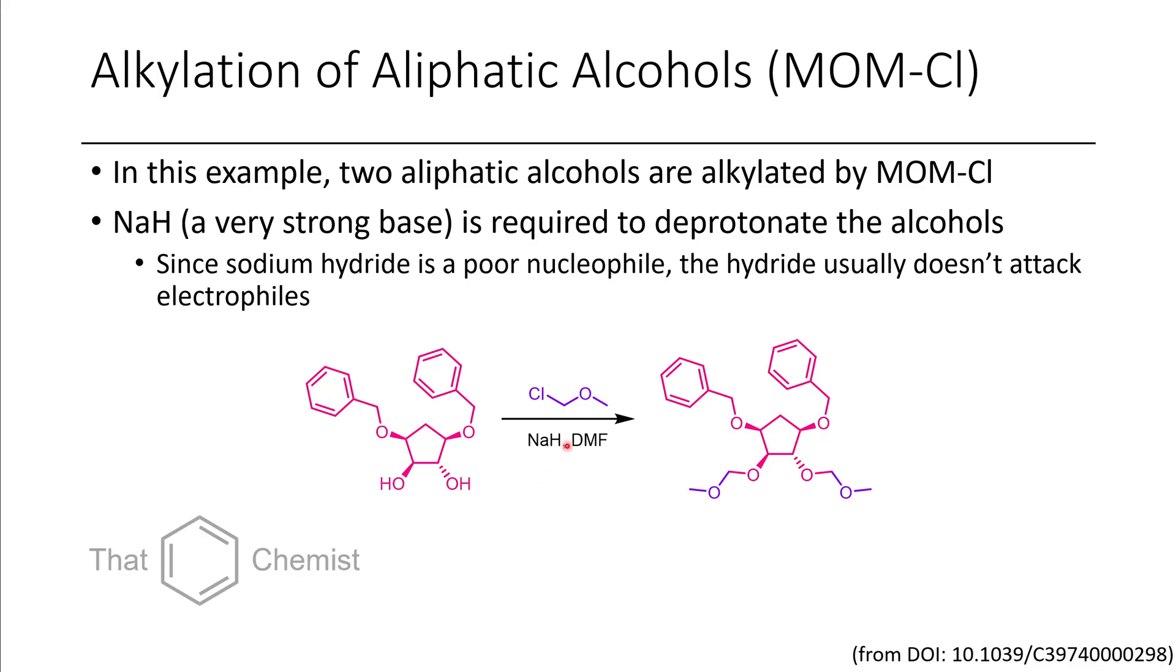In this case, we have mom chloride. Mom chloride is a somewhat commonly used protecting group for alcohols, and what happens is you deprotonate those alcohols, you get your alkoxide, displaces the chloride, forming this ether. Because they have two alcohols, they end up forming two alkoxides, and mom chloride reacts with each of them. We're not talking too much about specific uses of protecting groups at this point, but there's different methodologies for deprotecting different protecting groups for alcohol.